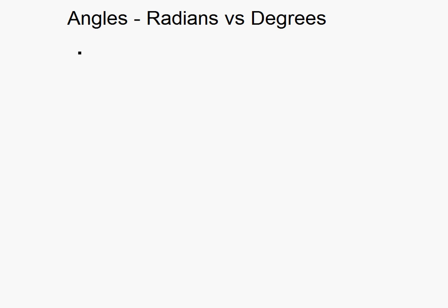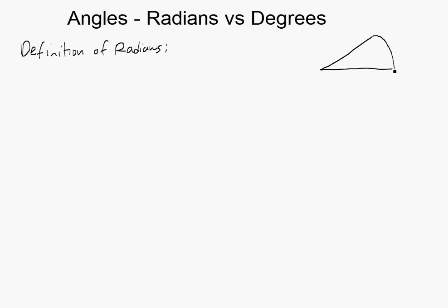Radians is just another unit for angle. Here's the definition of radians. Let's say if you have an arc length, this is the radius R, and this is angle theta — theta is a Greek letter used for angles a lot in math. This is arc length, which is just the perimeter here.